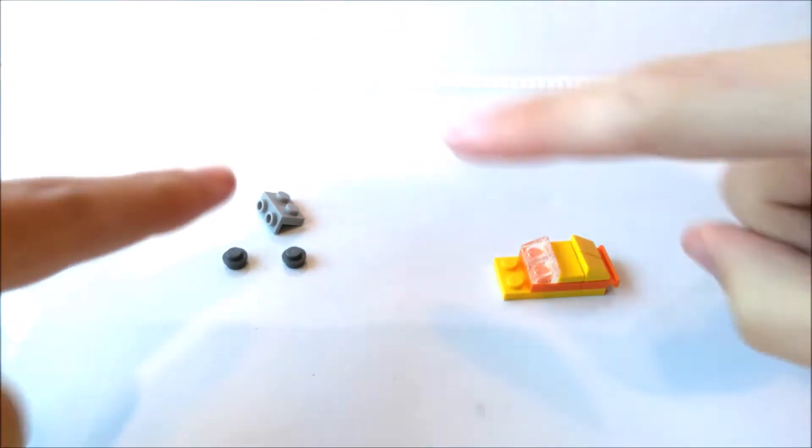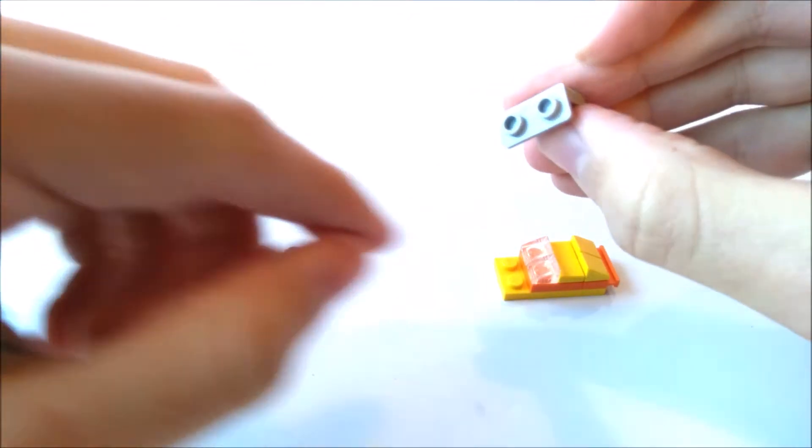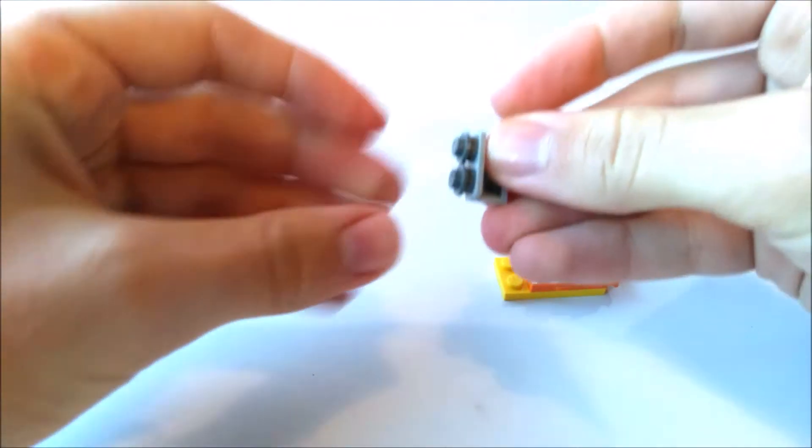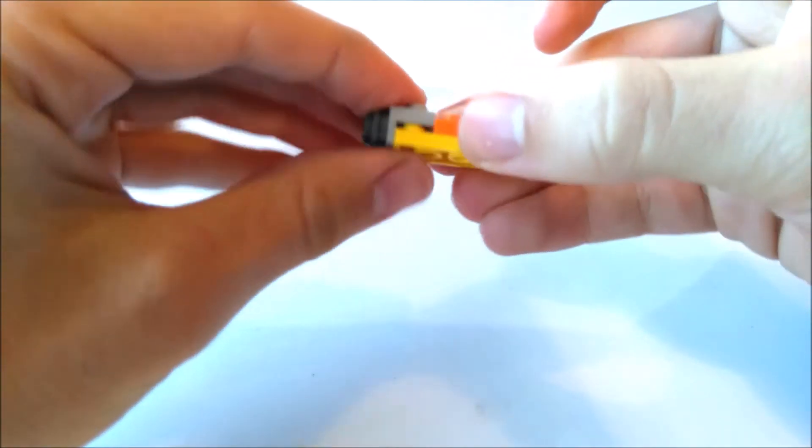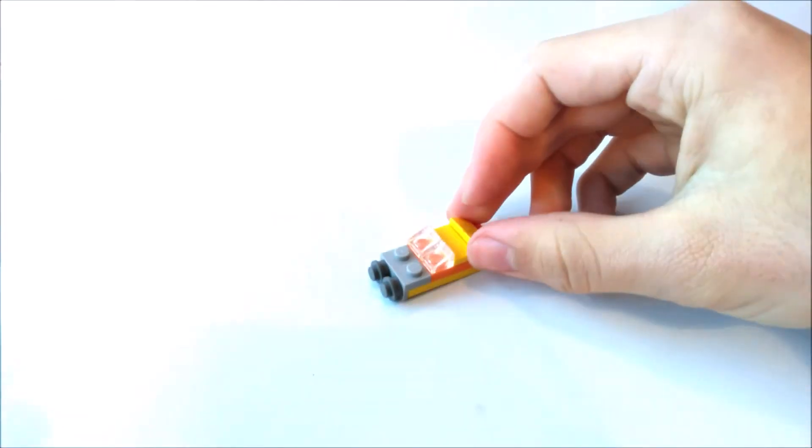And then we make the round cylindrical engines by taking one of these angled plates with the studs on the side. Two dark grey studs, and then just attaching that to the front. And there we have a very simple Anakin's Airspeeder.